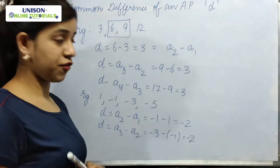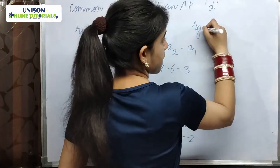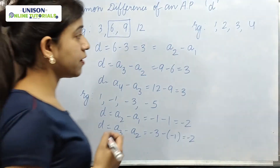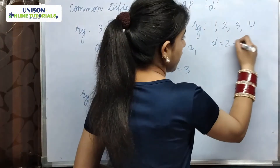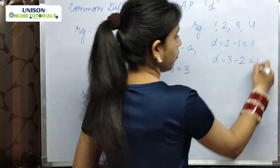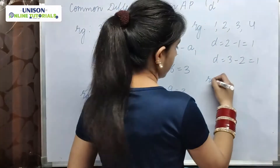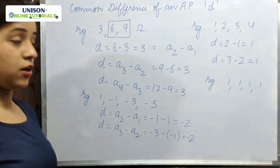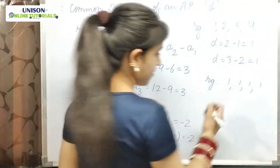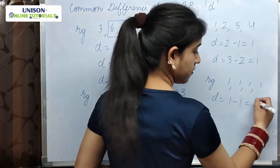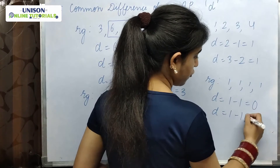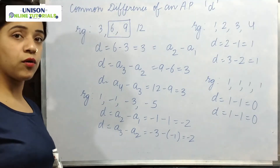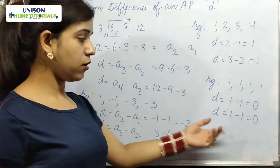Another example: 1, 2, 3, 4. This is also an AP. Common difference is 2 minus 1 = 1, and 3 minus 2 = 1 — positive. Now consider 1, 1, 1, 1. Is this an AP? Yes, this is an AP. Here, a2 minus a1 = 0, and a3 minus a2 = 0. So common difference is 0. Therefore, the common difference of an AP can be positive, negative, or zero.